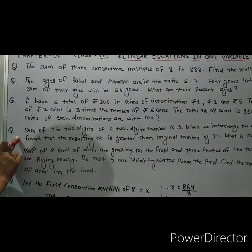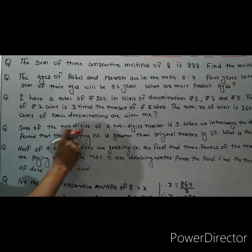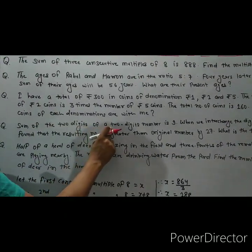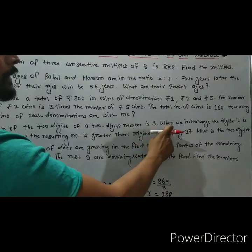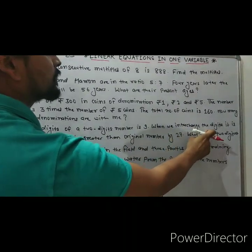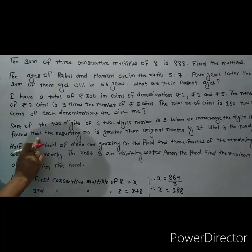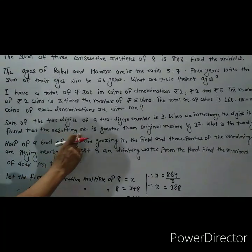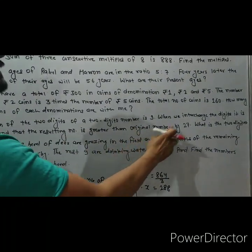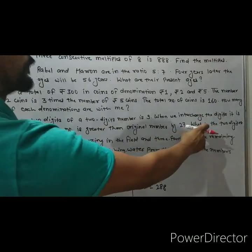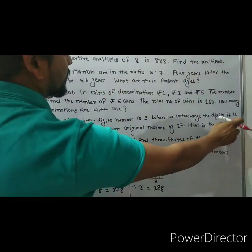Question number 4 — very very important students: The sum of the 2 digits of a 2-digit number is 9. When we interchange the digits, it is found that the resulting number is greater than the original by 27. Find the 2-digit number.